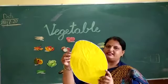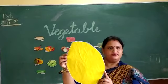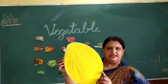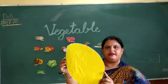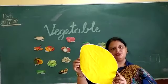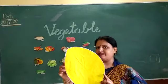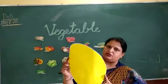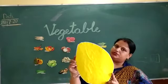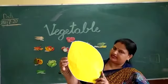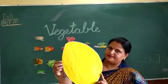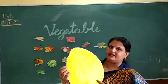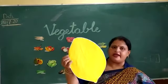Which vegetable is this? Do you know? Lemon. Which vegetable is this? Lemon. Lemon is a juicy vegetable. Lemon is also a juicy vegetable. What is the color of lemon? Yellow color. What is the color of lemon? Yellow color.